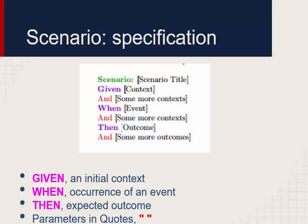Let's see the scenario specifications. A scenario needs a scenario title. You can see: Given — the initial context; When — the event that is going to happen; Then — the expected outcome. You can also add more context. There are three main areas: Given for initial context, When for the occurrence of an event, and Then for the expected output.